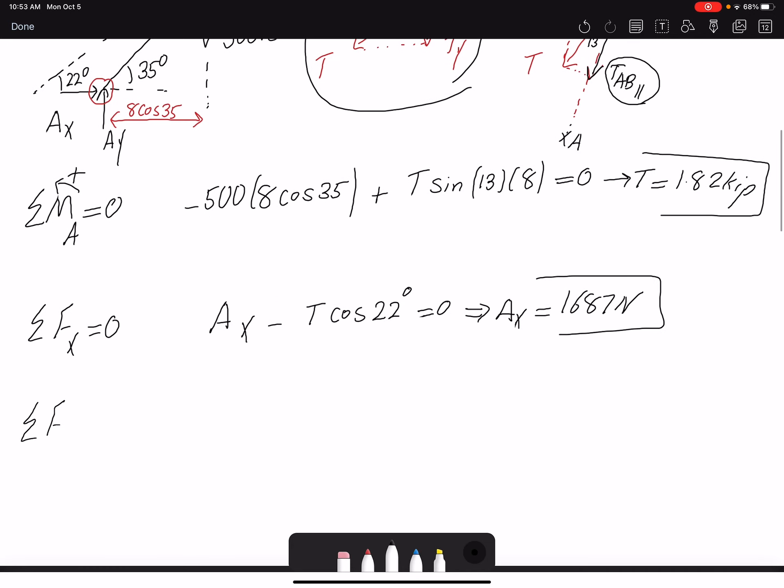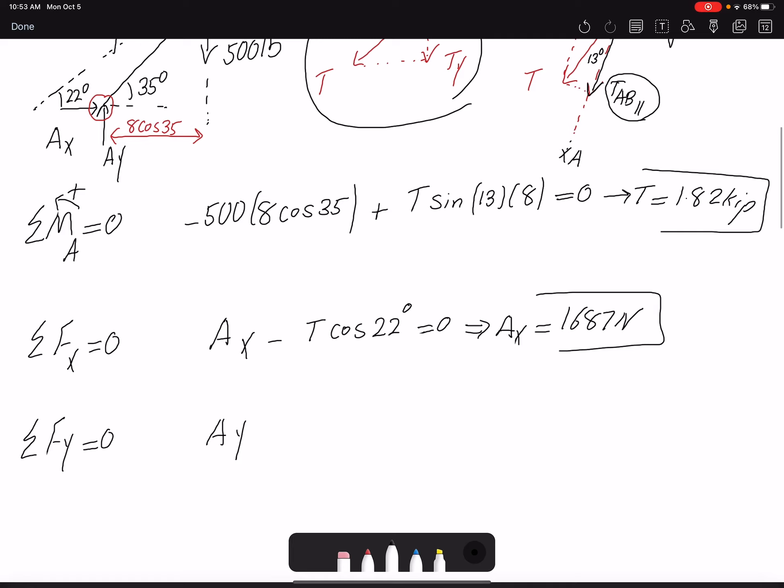1687 newtons. Summation of forces in y also equals zero. I have Ay, and then here in y I have more components, that weight, so negative 500, also T, T sine 22 equals zero. Therefore Ay, I have the value for T, 1181 newtons.